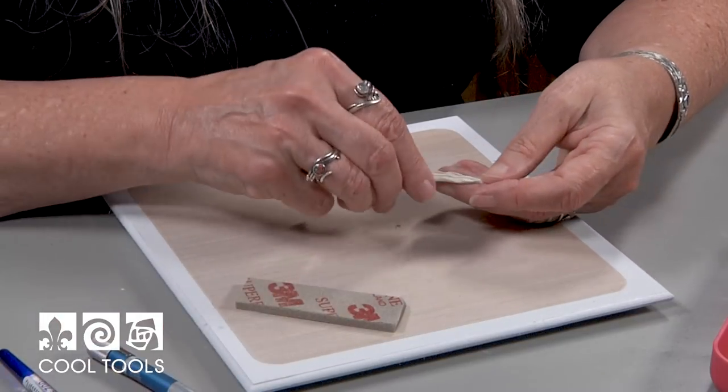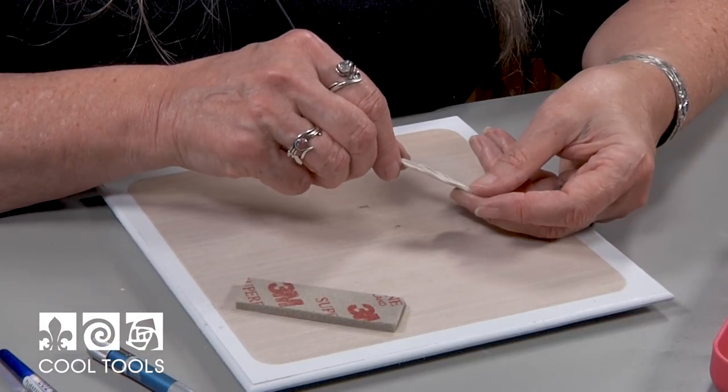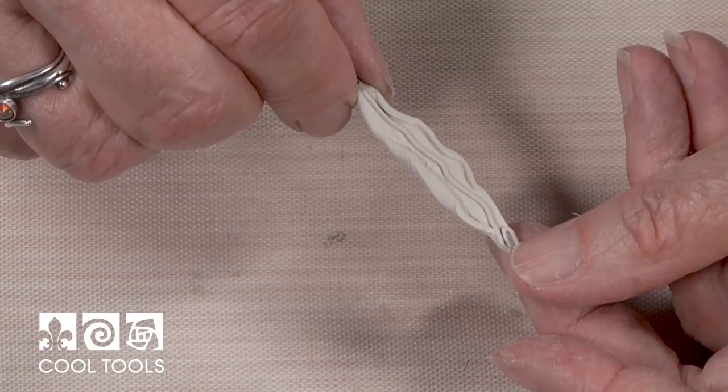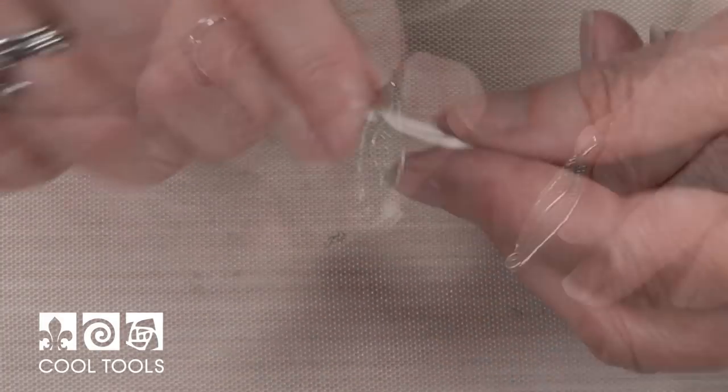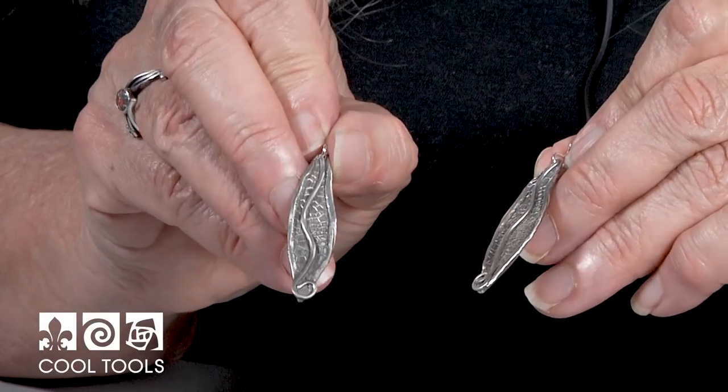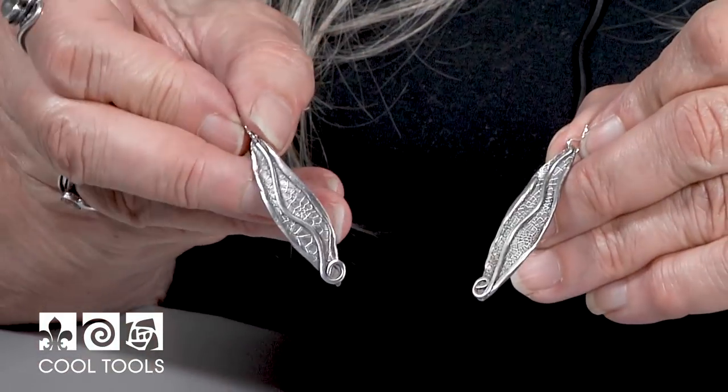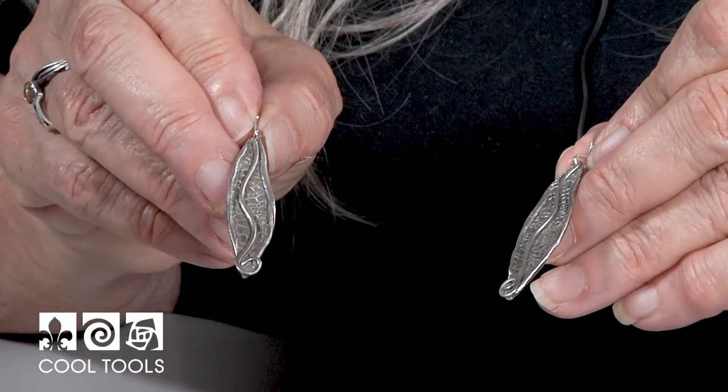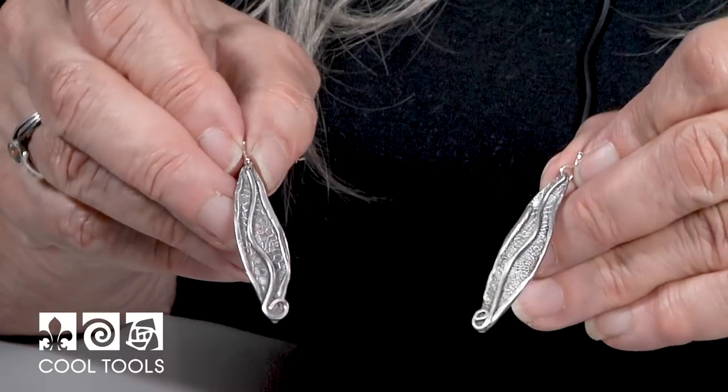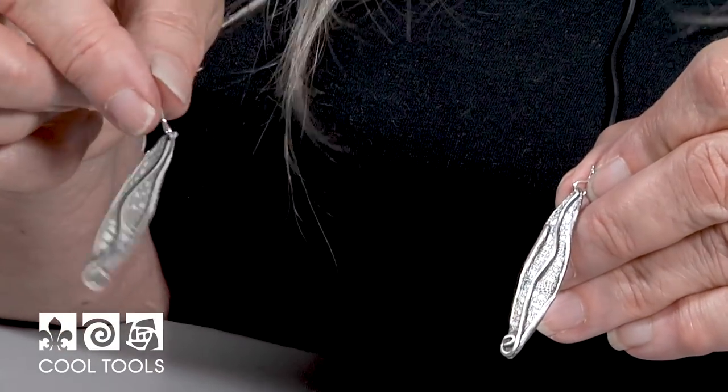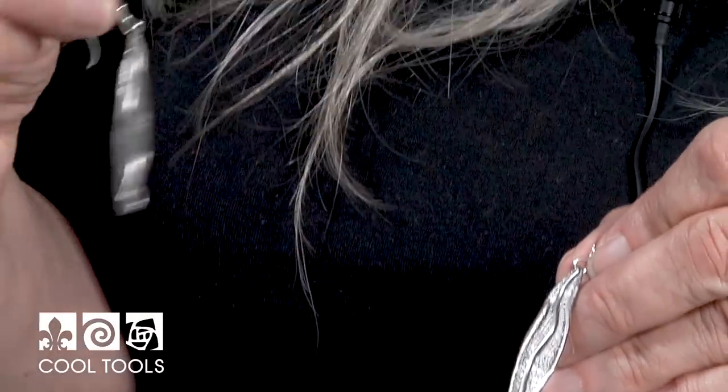So this will be fired, brushed, tumbled, patinaed and then final finished. And we'll attach ear wires. So here we have the finished earrings. They have been fired, brushed, tumbled, patinaed and satin finished. The satin finish brings out the texture and the contrast between the raised areas and they look really great. And I love the way they move in the ear wire. I've also attached a beautiful sterling silver ear wire to them. I think they came out great, don't you?